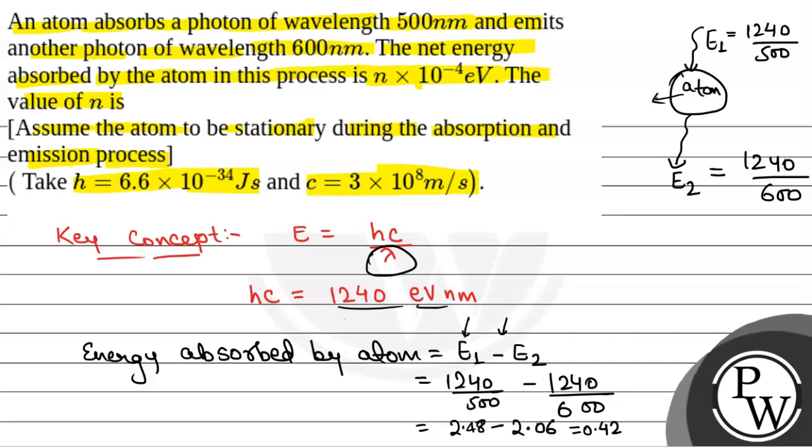So 0.42 electron volt, which will be equal to 42 into 10 to power minus 2 electron volt, or that will be equal to 4200 into 10 to power minus 4 electron volt. So the value of n will be equal to 4200. So this will be the final answer. Hope you all understood it well. Best of luck.